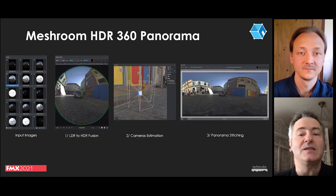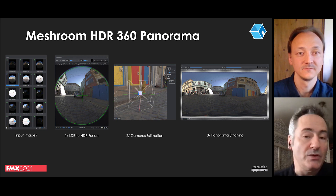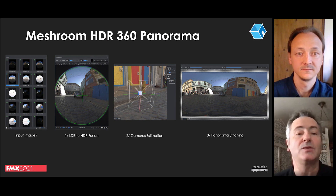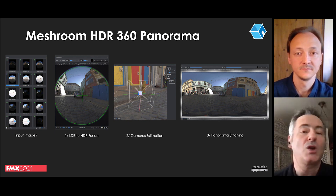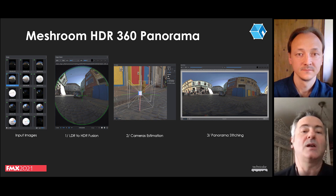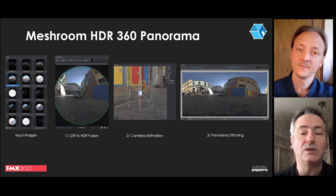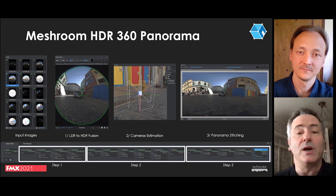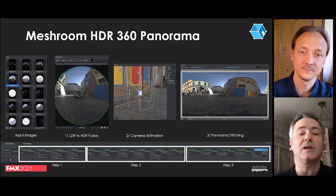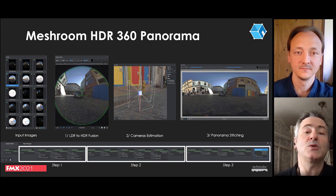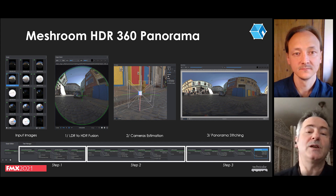The second pipeline in Meshroom is the HDR pipeline, composed of three main steps. The first step is the LDR to HDR fusion, to combine different exposures for each camera position. The second step is the estimation of internal and external parameters of the cameras. The third step is the warping and stitching of the different images. After step one you can visualize the HDR images, after step two you can see the alignment of cameras around the nodal point, and at the end of step three you can see the final 360 panorama image. Now Fabien is going to show you this pipeline.